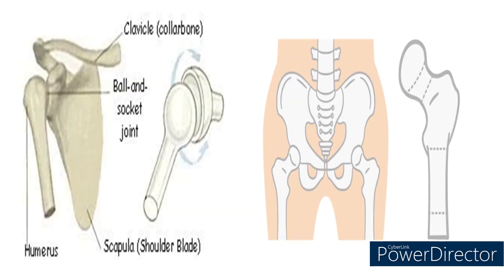Ball and socket joint: this type of joint is present in the shoulders and hips. It allows maximum movement in all directions. The end of one bone is round like a ball and fits into the hollow socket of the other bone. The shoulder joint and the hip joint are examples of the ball and socket joint.